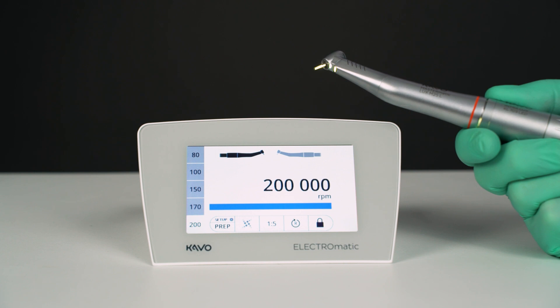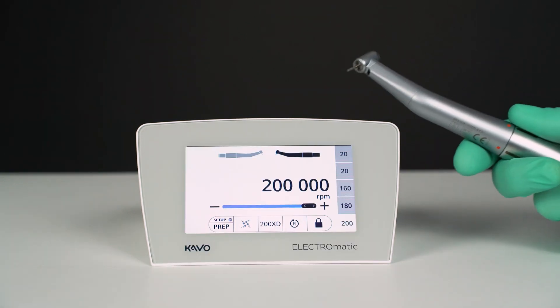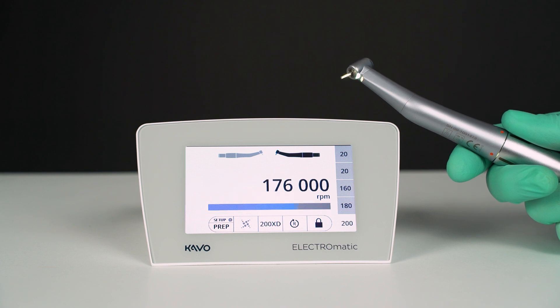The ratio increases the motor speed of 40,000 rpm up to 200,000 rpm burst speed. The electronic of the Electromatic recognizes the comfort drive automatically when the tubing is adapted. No further setup is needed. The display shows the real burst speed.